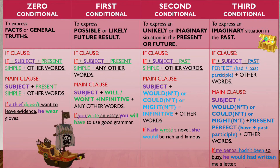Second conditional is used to express an unlikely or imaginary situation in the present or future. For example: if Carla wrote a novel, she would be rich and famous.